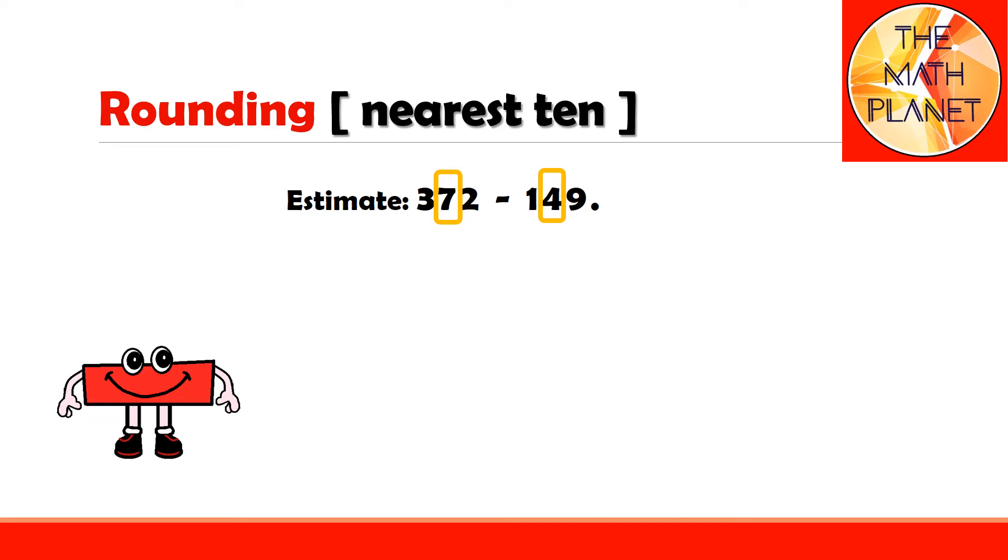After this, I will determine my benchmarks. For 372, the lower benchmark is 370 and my upper benchmark is 380, while for 149, the lower benchmark will be 140 and the upper benchmark is 150.